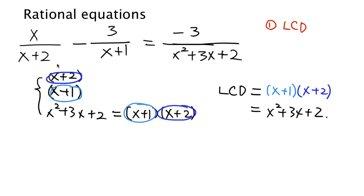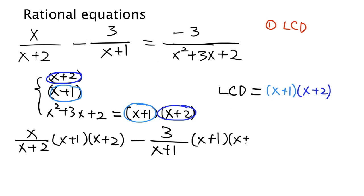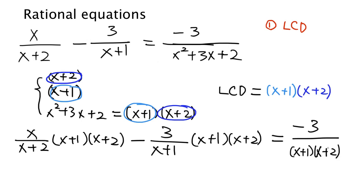Now we are going to multiply every term in the equation by this least common denominator. The first term x over x plus 2 times LCD, which is x plus 1 times x plus 2. Minus the second term 3 over x plus 1 times the LCD. That equals the third term on the right-hand side, negative 3 over x squared plus 3x plus 2 — we write this in factored form as x plus 1 times x plus 2 — times LCD, which is x plus 1 times x plus 2.